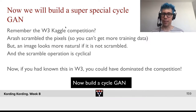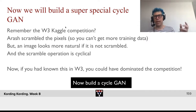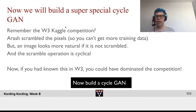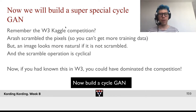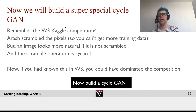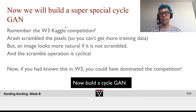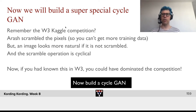Scrambling operations are cyclical — if I scramble it and scramble it back, I'm back to the original thing. And not only that, in the unscrambled space, they should look like actual images. That means constructing a cycle GAN for this is figuring out how Arash had been scrambling the images. So if you had known this in week three, you could have completely dominated the competition and used the ConvNet and all kinds of tricks. Now I want you to build a simple cycle GAN — namely a cycle GAN that descrambles the stimuli we used in week three.